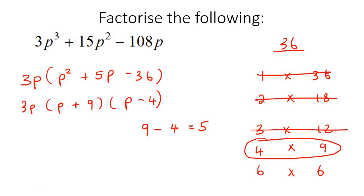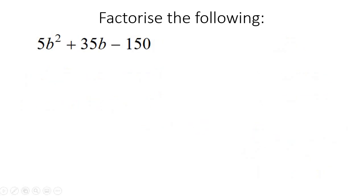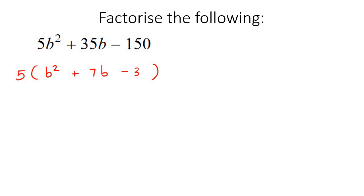In this lesson we're just learning how to take out a common factor first — that's all that we're doing. So here's our next example. Always remember: whenever you get a trinomial, always see what you can take out. For this one we're going to take out a common factor of 5, because 5 can go into all three numbers. You take out the 5 in the front, and then you'd be left with b² plus 7b — because 35 divided by 5 is 7 — and then negative 30.